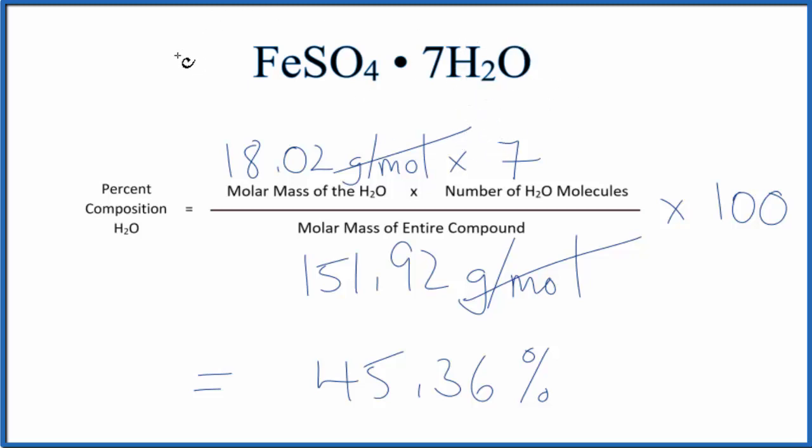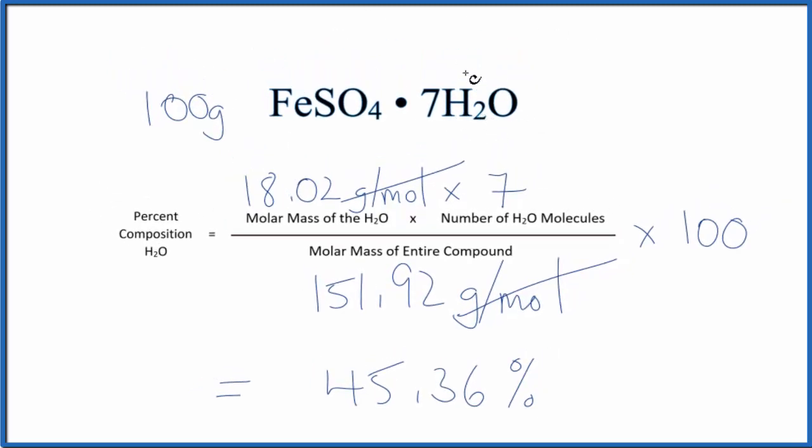Another way you can think about this is if you have a hundred grams of this substance, you know that 45.36 percent of this is going to be just the water. And since you have a hundred grams, 45.36 percent of a hundred would mean you'd have 45.36 grams in a hundred grams of FeSO4·7H2O.